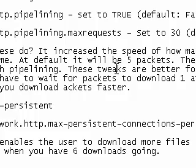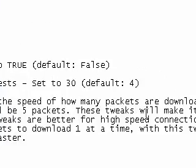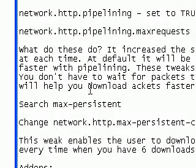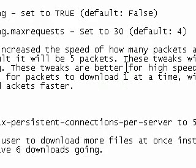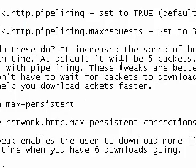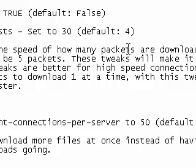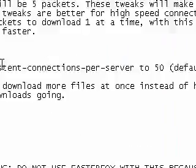Set it to 30. Now what do these do? It increases the speed of how many packets are downloaded at a time. By default it will be five packets. These tweaks will make it faster with pipelining. If you have a high speed connection, you don't have to wait for packets to download one at a time — you can just download them all at once.